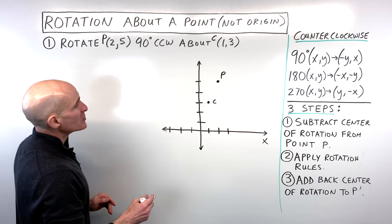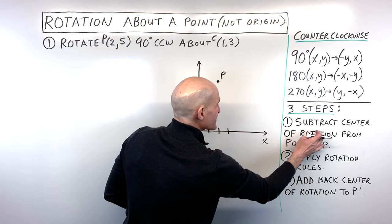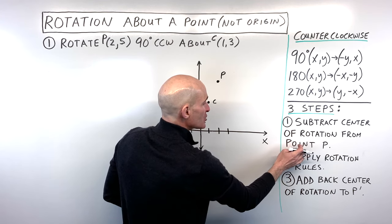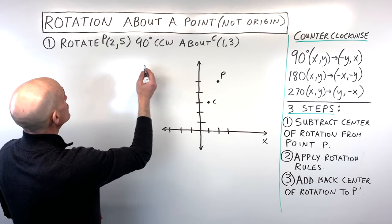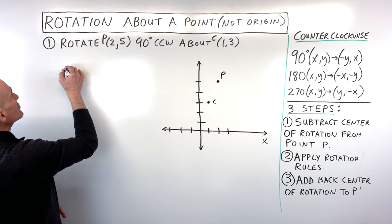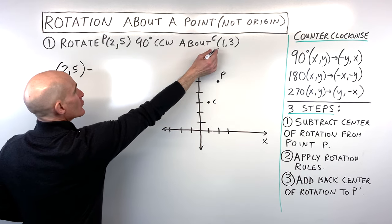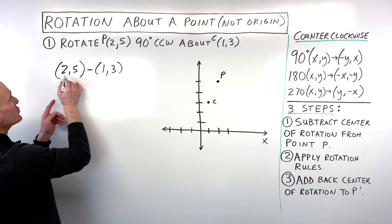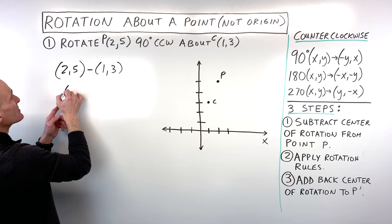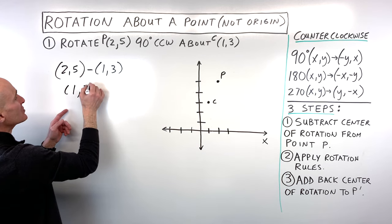The first step is to subtract the center of rotation from point P. So we take our point (2, 5) and subtract the center of rotation (1, 3): 2 minus 1 is 1, and 5 minus 3 is 2.